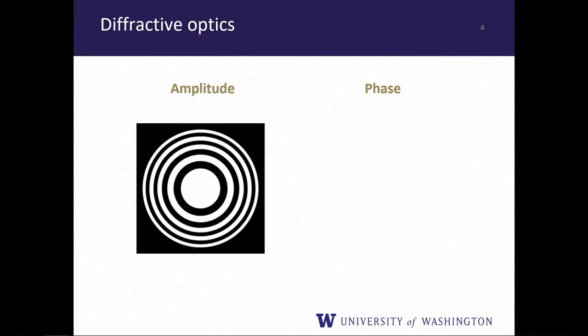Amplitude diffractive optics, such as zone plates, are designed to focus light at some finite distance away. They function by blocking light that doesn't interfere constructively at the focal point, and allowing light that will interfere constructively to pass. This works quite well for applications like X-ray lenses. But ultimately, if you want an efficient optical device, you really don't want to block half of your light.